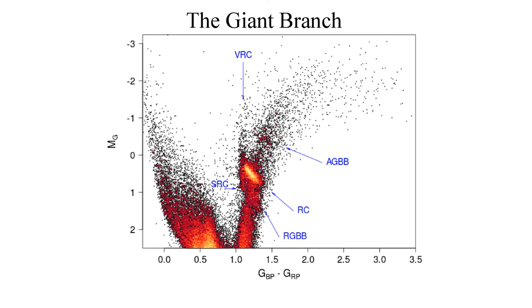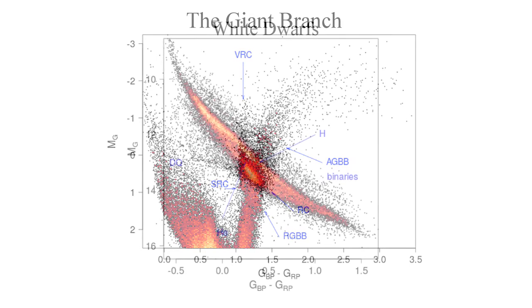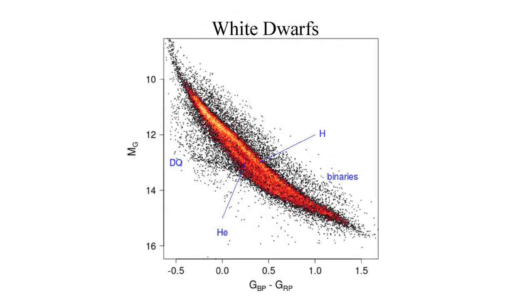Zooming on the white dwarf sequence, it is so seen that you actually see for the first time the split between the hydrogen and the helium white dwarf in an HR diagram.